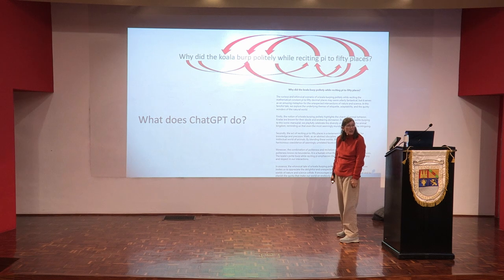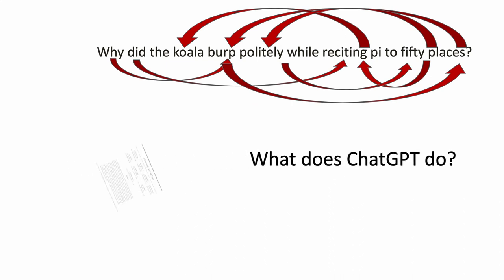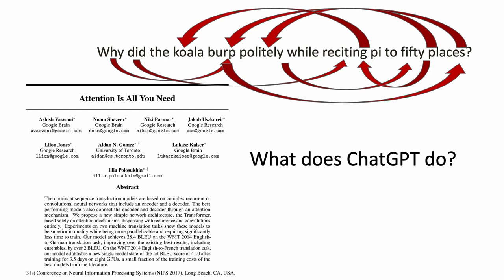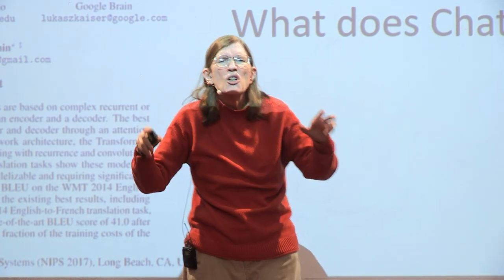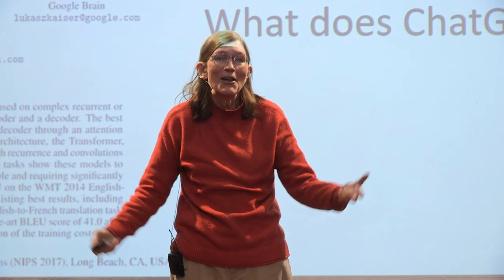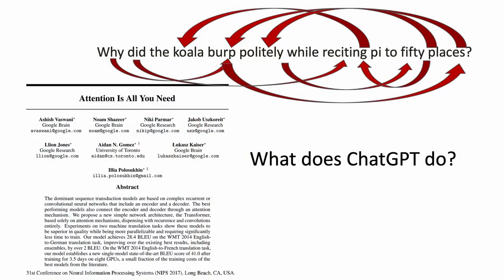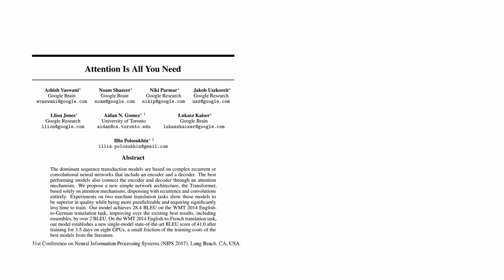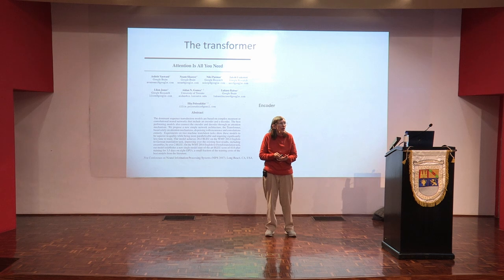The real magic that made this happen is this paper right here: 'Attention is All You Need,' published by Google Engineers in 2017. Most research papers are read by maybe five people, but this one has been cited over 100,000 times — it's tremendously important. It's because this paper introduced the idea of the transformer, and the transformer is what makes the magic of large language models.